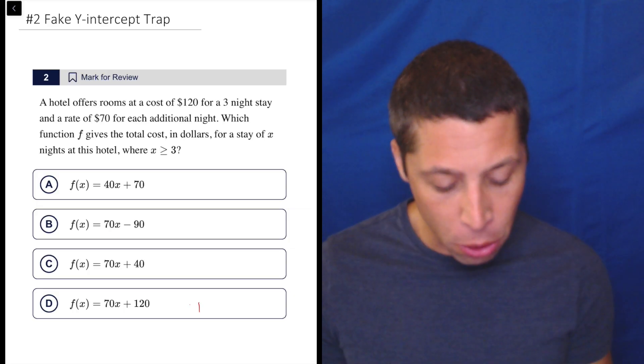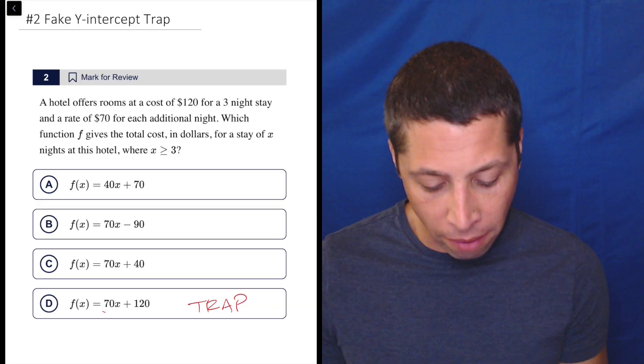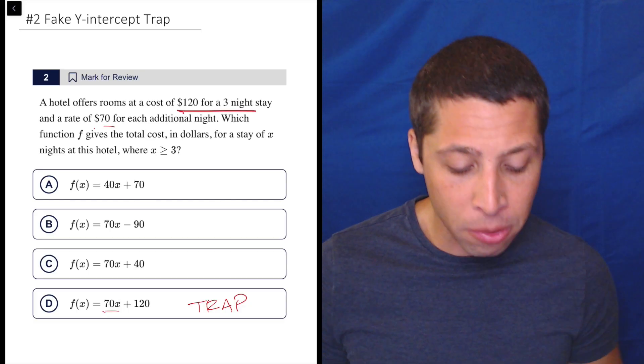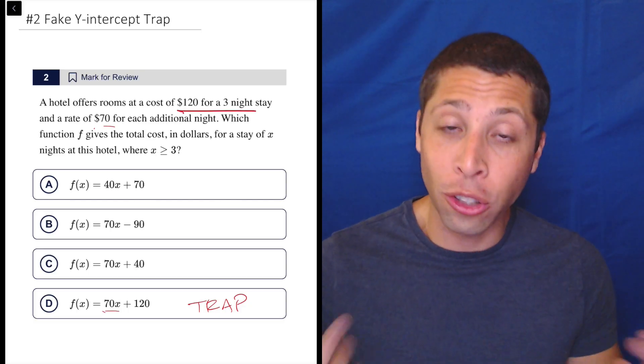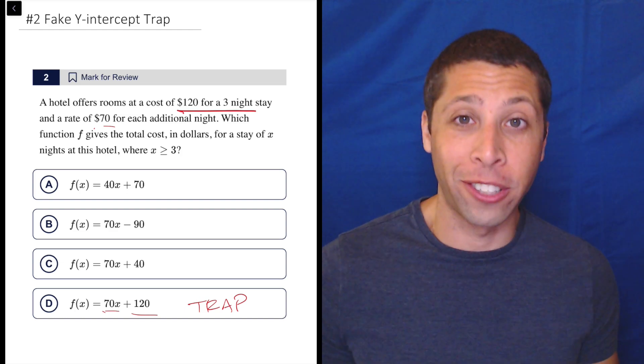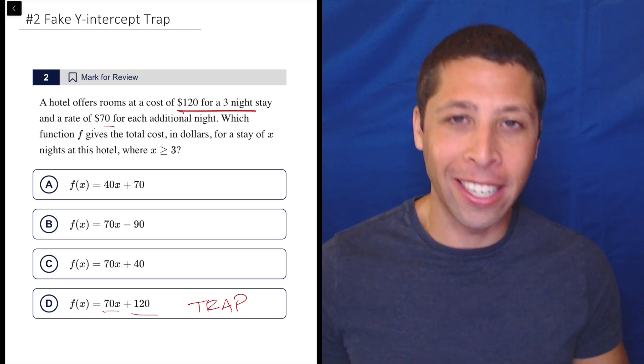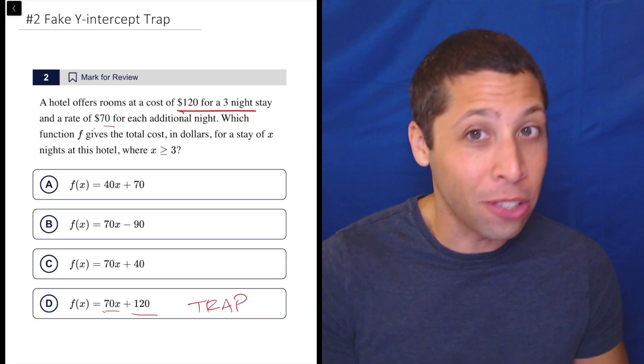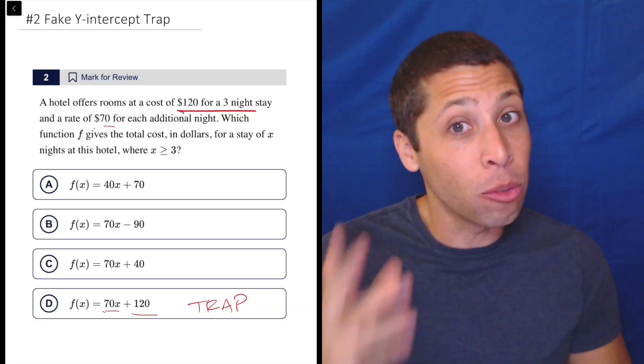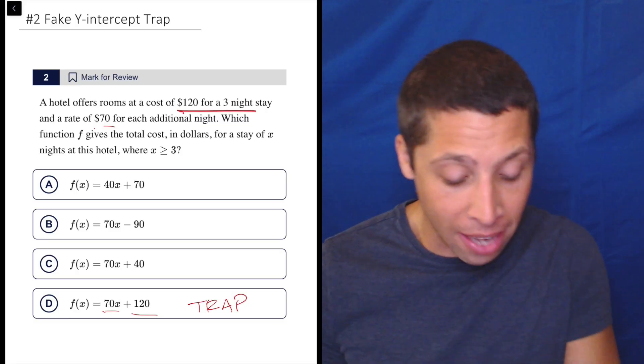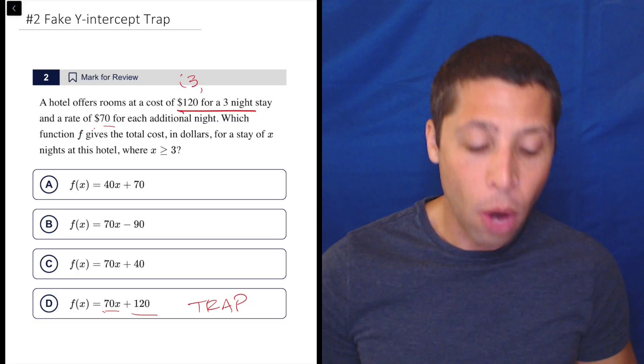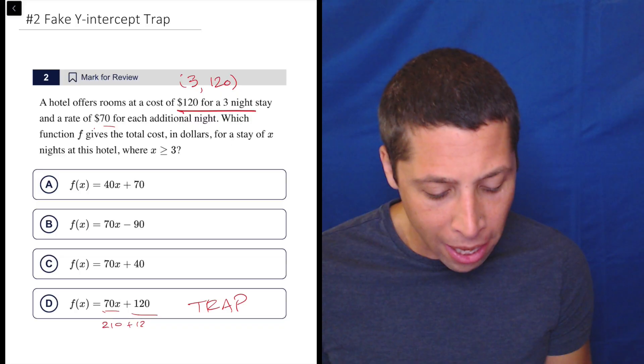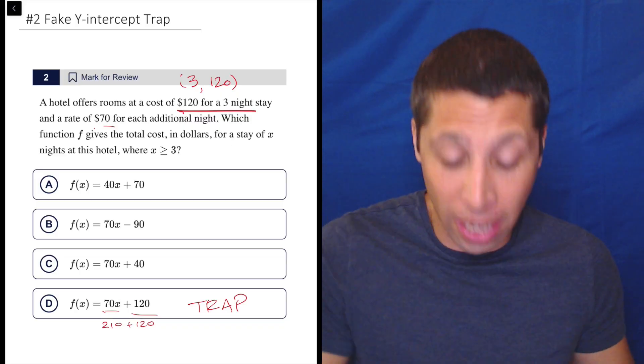The SAT absolutely loves to set you up with stories that involve fake y-intercepts, so you've got to be very careful. What they want here is for you to pick choice D. This is very clearly a trap. We have a slope of 70. This looks like a y equals mx plus b situation. We have a rate of 70, so that seems really good. And it seems like we are starting at $120. So our starting point, our y-intercept, should be $120. But that does not make any sense here. That is not exactly what they're saying. Remember, first of all, a y-intercept needs to have an x-coordinate of 0. This is not what happens when you stay 0 nights. This is what happens when you stay 3 nights. And we should just think of this as a plug points into equations situation. We have 3 as our value of x, and 120 is supposed to be our value of y. If we plug that in here, that would be 210 plus 120, way more than what we're supposed to get for that y value.